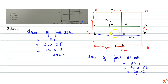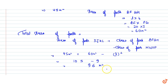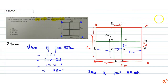The area of MNOP, the intersection, equals 3 meters into 3 meters, which is 9 meters squared. So the total area of the path equals 45 plus 60 minus 9, which gives 105 minus 9, equal to 96 meters squared. The area of the path is 96 meters squared, which matches option A.